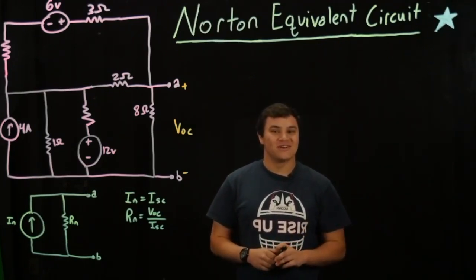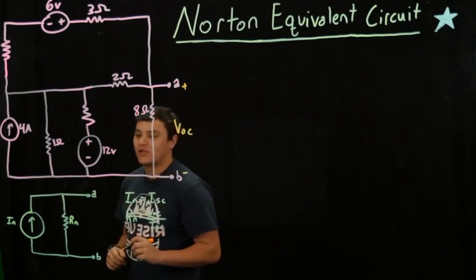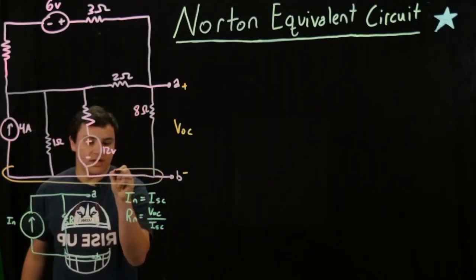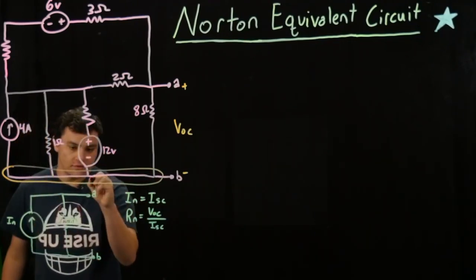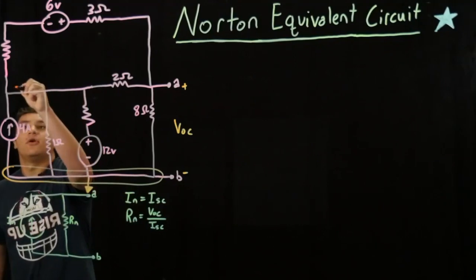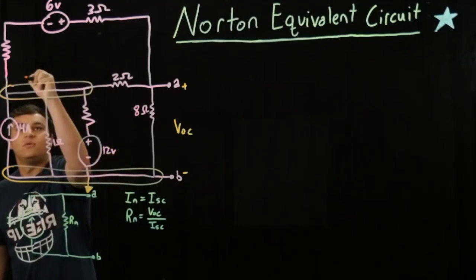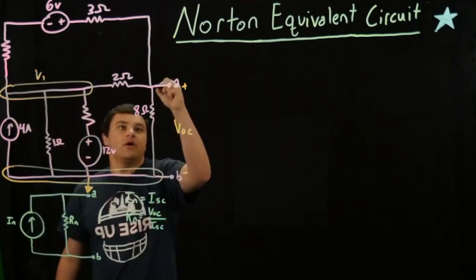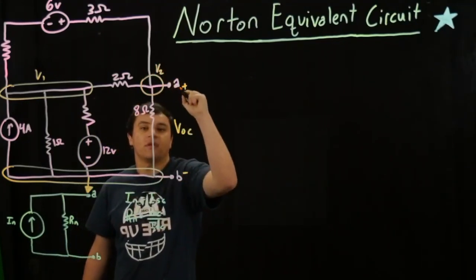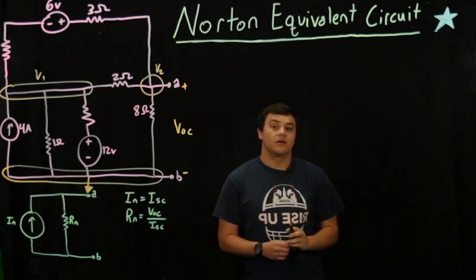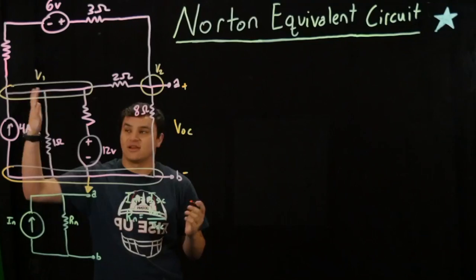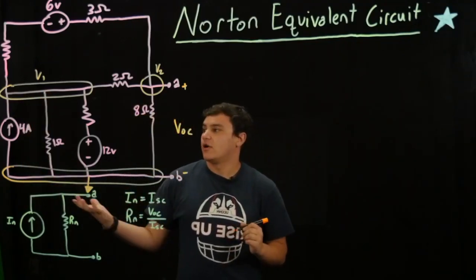Let's begin with our open circuit test. We're going to use the node voltage method. We see we have a node here — we're going to call this our reference node for convenience. We have another node up here; we'll call this voltage V1. And our third node is right here, and we'll call this voltage V2.